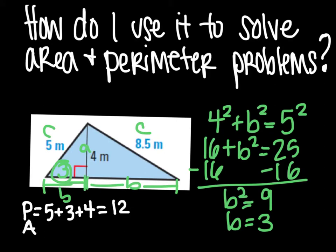And the area would be one half base, so one half times 3 times our height of 4, which means our area is 6. And both of these would be meters, and then meters squared for area.